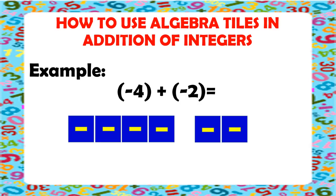Now, we have all the tiles drawn in. Since we are adding, we are just simply going to count how many tiles we have together. So, we have 1, 2, 3, 4, 5, and 6. We have 6 blue tiles all together. And blue means negative. Therefore, negative 4 plus negative 2 is equal to negative 6.